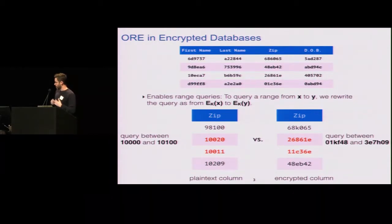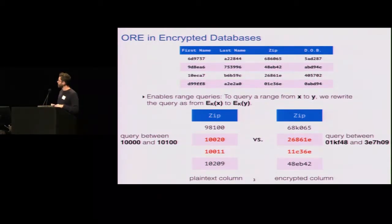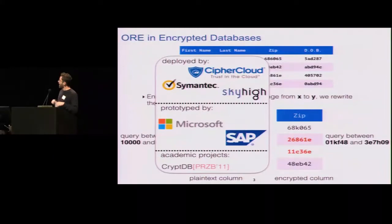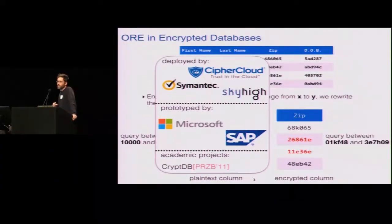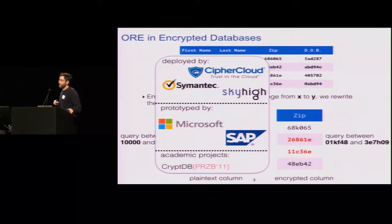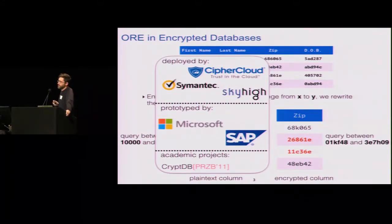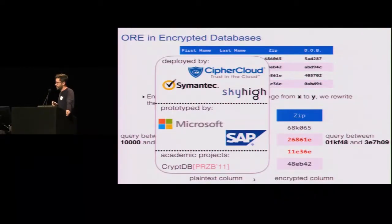This is particularly nice and easy to deploy because you don't have to modify the service. Whoever's running and holding this table doesn't need to know that encryption has been applied. Because of that, several companies — startups and larger companies — have deployed this, encrypting customer data now. Other companies have prototyped it. If you're familiar with the CryptDB project, it crucially used order-preserving encryption along with other types of property-revealing encryption.